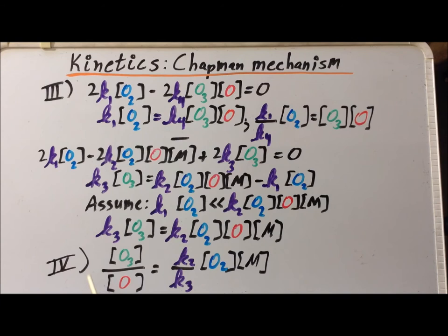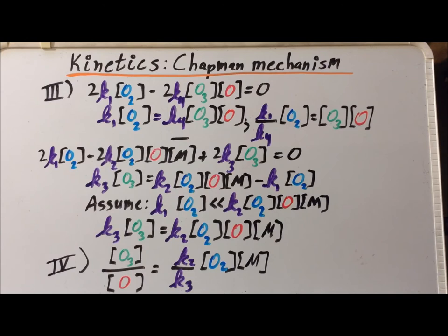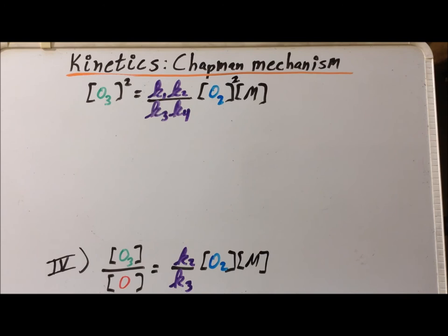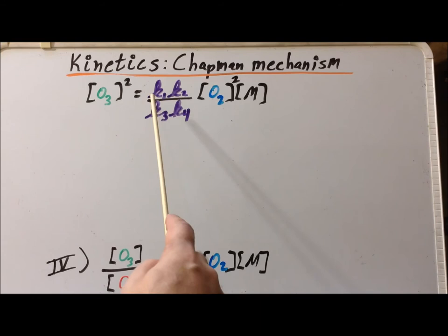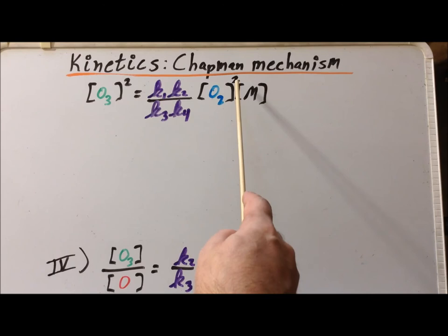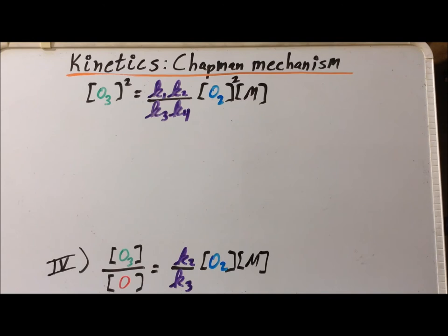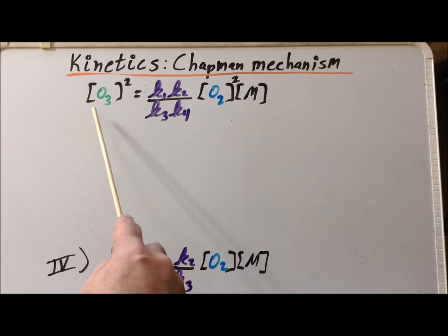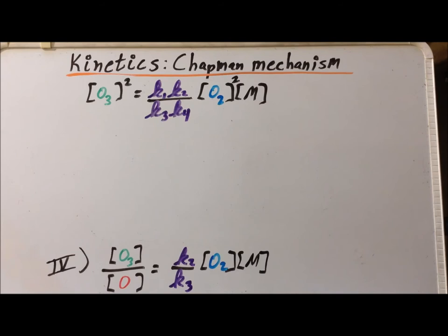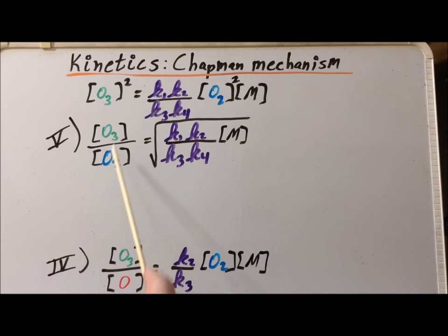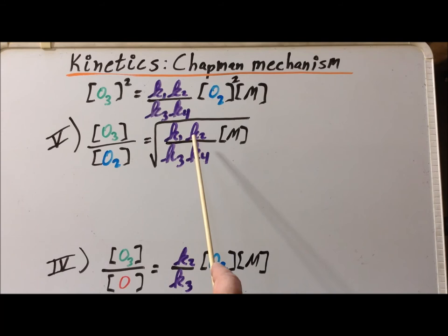Notice that Equation IV gives the ratio of ozone to oxygen atoms, whereas Equation III gives the product of those two concentrations. Multiplying Equation III by Equation IV, we get [O3]² = (K1·K2)/(K3·K4) · [O2]²·[M]. We are particularly interested in the ratio [O3]/[O2], which we obtain by dividing each side by [O2]² and taking the square root, giving Equation V: [O3]/[O2] = √(K1·K2·[M] / (K3·K4)).